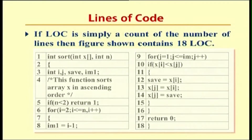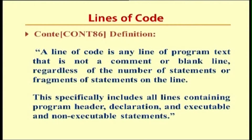How exactly can we define lines of code? Kant defined it as: a line of code is any line of program text that is not a comment or a blank line, regardless of the number of statements or fragments of statements on the line. This specifically includes all lines containing program headers, declarations, and executable and non-executable statements. Even commands are inclusive.